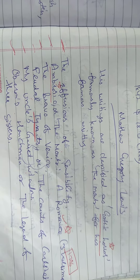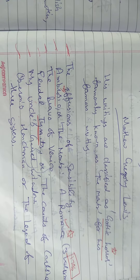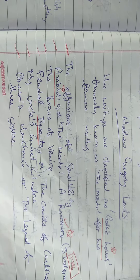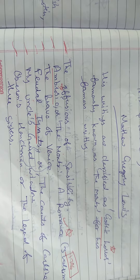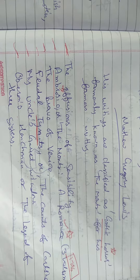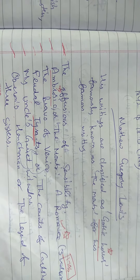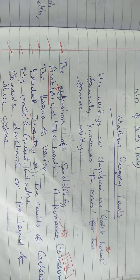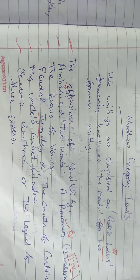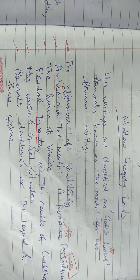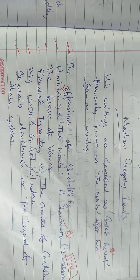His works are called Gothic horrors because he wrote his novels in Gothic form. Gothic novels are those in which there are appearances of ghosts and supernatural elements. During the Romantic Era, many works included supernatural powers, ghosts, and similar elements — that is why they were called Gothic.